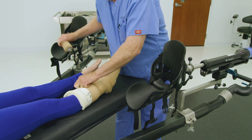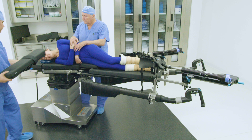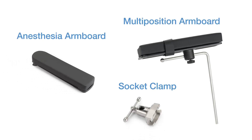Once the feet are prepped, it is time to position the patient in a lateral position. Using safe patient handling practices and AORN guidelines, roll the patient onto their side into the lateral position. Next, a standard anesthesia armboard and a multi-position armboard should be installed to position the arms on the non-operative side of the patient in the lateral position.